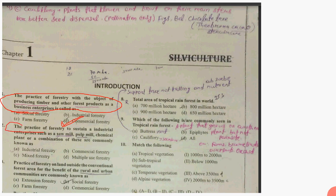The practice of forestry to sustain an industrial enterprise — such as a sawmill, pulp mill, or chemical plant, or a combination of these — is commonly known as Industrial Forestry. So we click on Industrial Forestry.